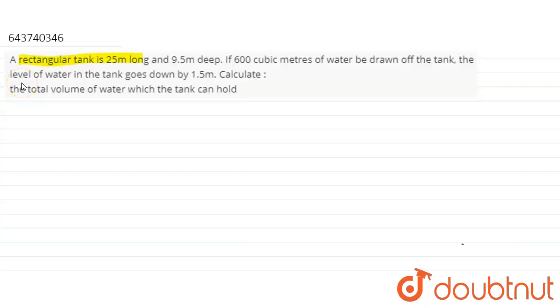A rectangular tank of 25 meters long and 9.5 meters deep. If 600 cubic meters of water can be drawn out of the tank, the level of the water in the tank goes down by 1.5 meters. Calculate the total volume of water which the tank can hold.